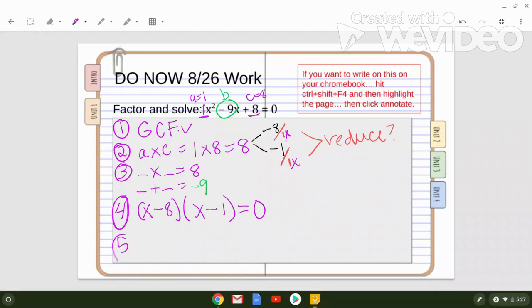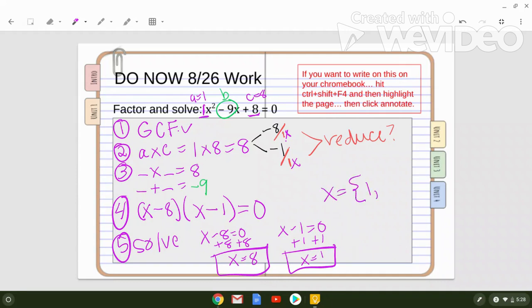Step 5, we solve. So x minus 8 equals 0. Add 8 to both sides. We get x equals 8. And then we got x minus 1 equals 0. Add 1 to both sides. We get x equals 1. So your answers, you have two answers: x equals 8 and x equals 1. The way that we were taught to write them in algebra 1 is x equals fancy brackets 1 comma 8.